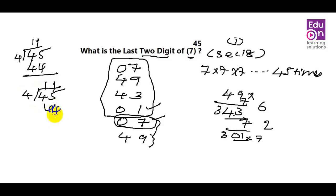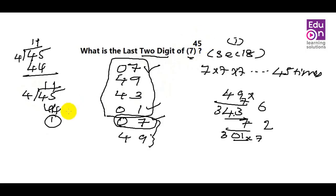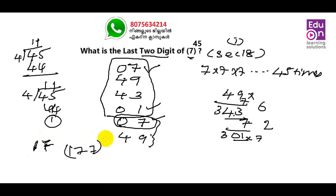We have to take a look at the question. We have to take a look at the higher level exams — the CAT and MBA exams. We have to take a look at 7 to the power of 17.